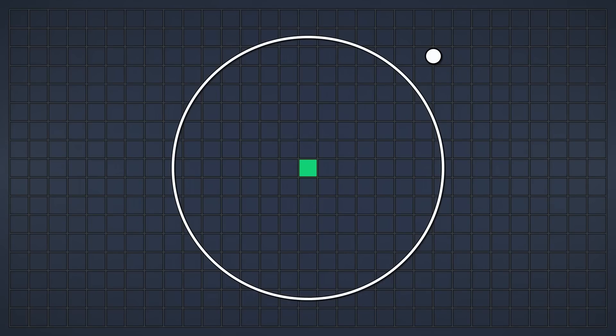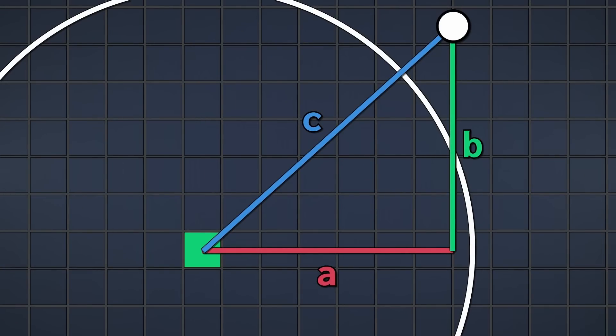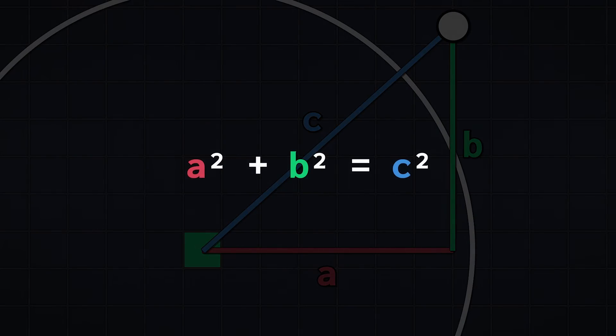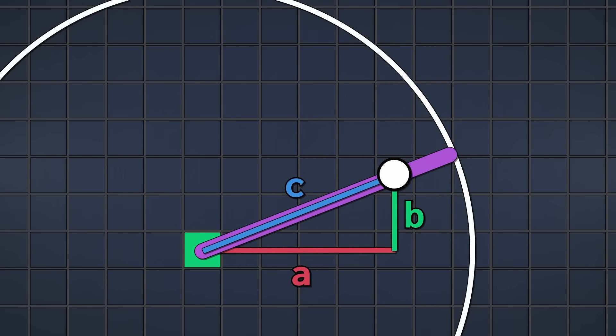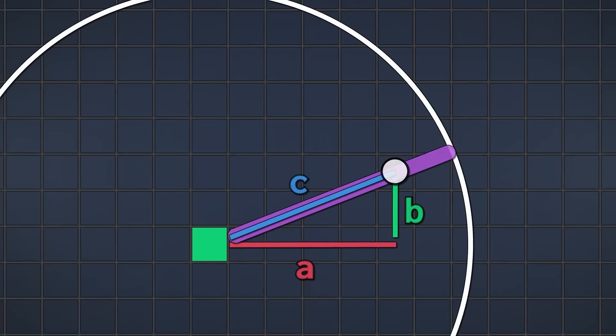Say we have this arbitrary point over here. Our point is defined using its X and Y coordinate, right? If we draw these as two lines, and then also draw a line between the center of the circle and the point, we get a right triangle. Let's label the sides of this triangle as a, b, and c. Thanks to the Pythagorean theorem, we know that a squared plus b squared equals c squared. In other words, we can calculate the length of c, which is the square root of a squared plus b squared. But why do we want to know this length? Well, right now, the length of c is longer than the radius. This means our point is outside of the circle. However, if we move the point inside the circle, look what happens. Now c is shorter than the radius. So by checking if c is larger or smaller than the radius, we can determine if the point is inside or outside.